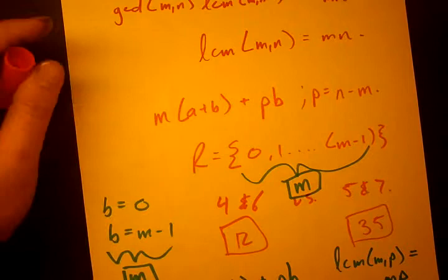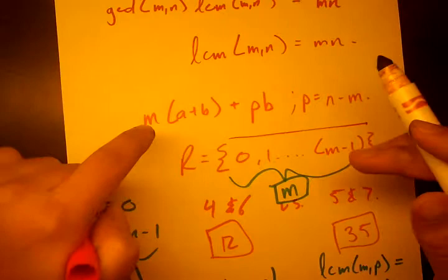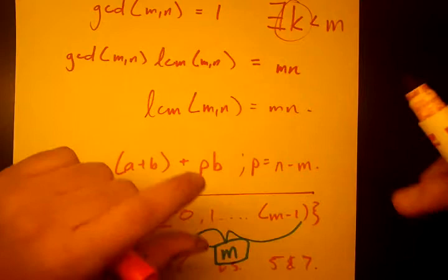So that means we don't hit M remainders. We hit only K remainders. And if we hit only K remainders, we can't possibly hit all of these, which means at least one of these remainders will not be covered, which means that there is some multiple of M plus that R or those R's that will never be hit and there's no Frobenius number.